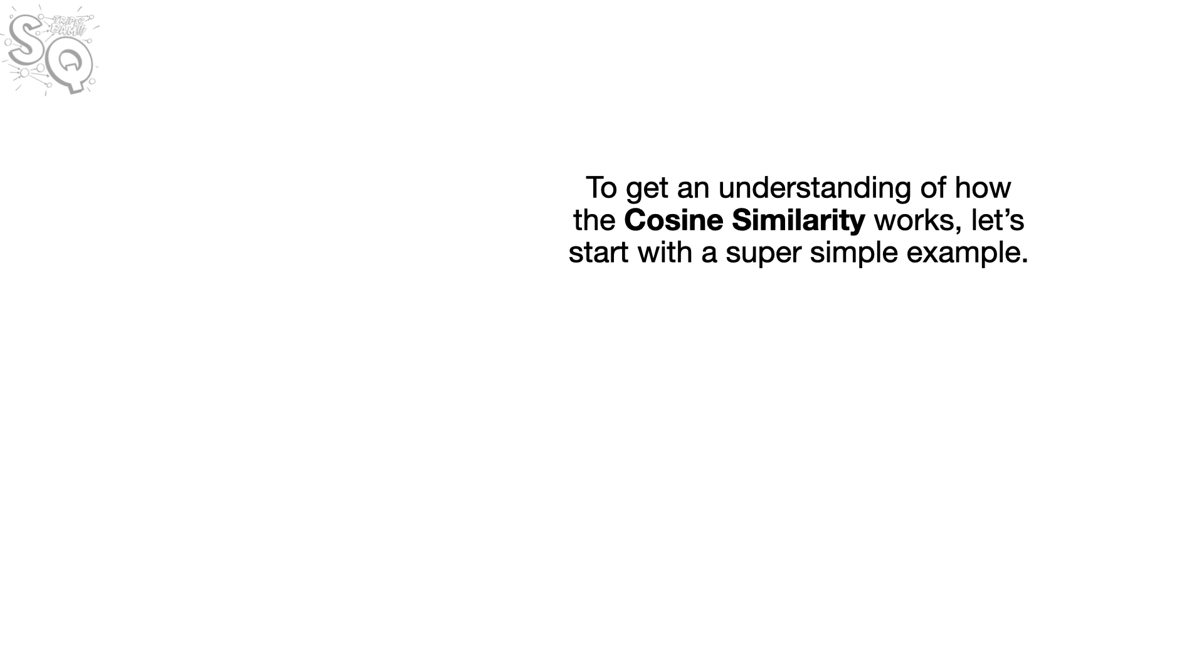The cosine similarity is a relatively easy-to-calculate metric that can tell us how similar or different things are. BAM! To get an understanding of how the cosine similarity works, let's start with a super simple example.